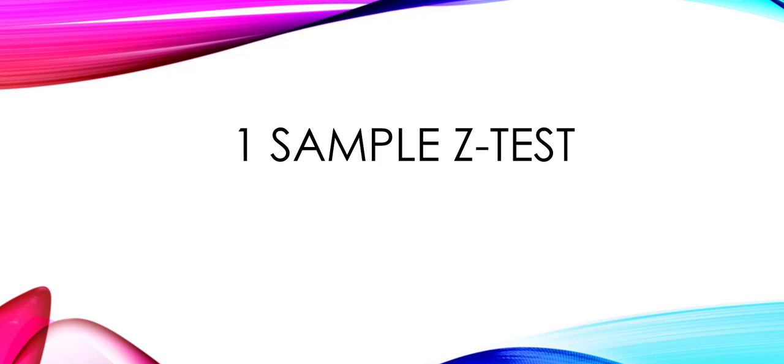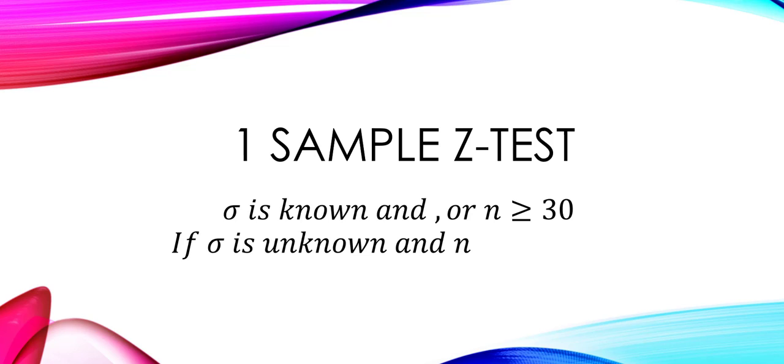Hi, in this video I will be talking about one sample z-test. We use this when sigma is known and/or when the sample size is large. If our sigma is unknown and our sample size is large, we can use s in place of sigma. In this video we will also be talking about how to construct a confidence interval for the population mean.